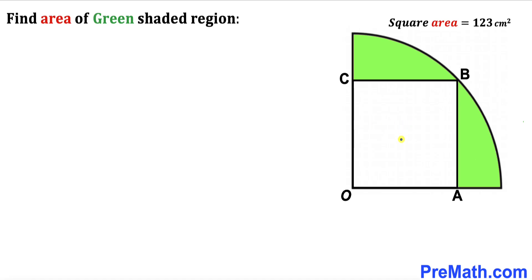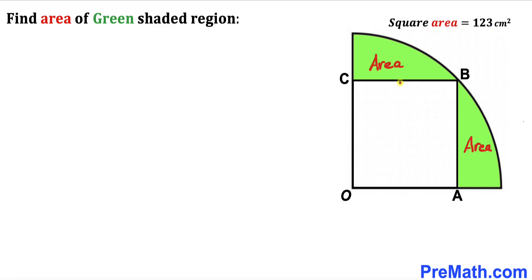Welcome to pre-math. In this video we have a square OABC fully inscribed in a quarter circle with center O, as shown in the diagram. The area of square OABC has been given to us as 123 centimeters square, and our task is to calculate the area of the green shaded region — both parts combined.